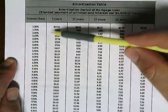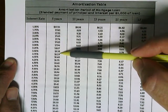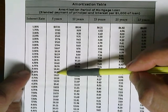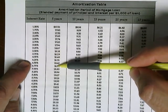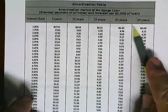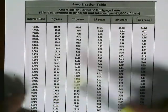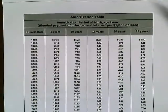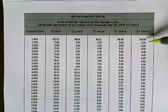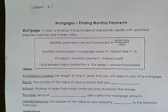Now look at what happens to the monthly payment as the interest rate increases — sticking with a 5-year amortization, it increases as well. That's a direct relationship. So if the amortization period goes up, the payment goes down; if the interest rate goes up, the payment goes up. To decrease the monthly payment, you increase the amortization period or shop for a lower interest rate.